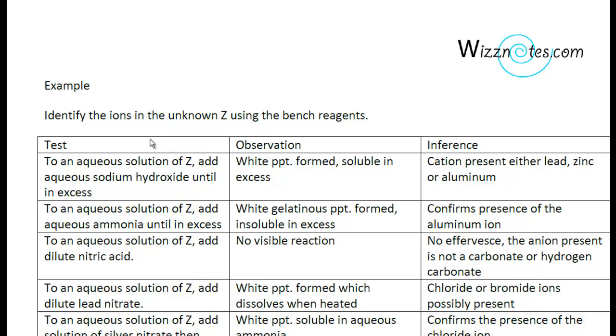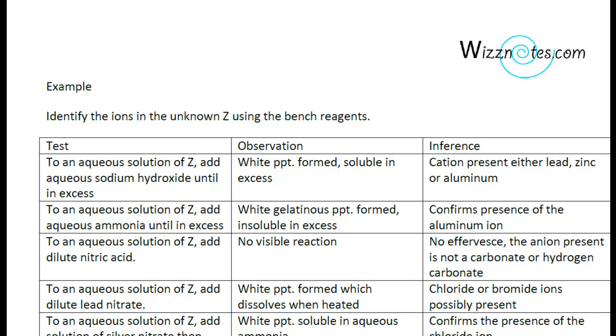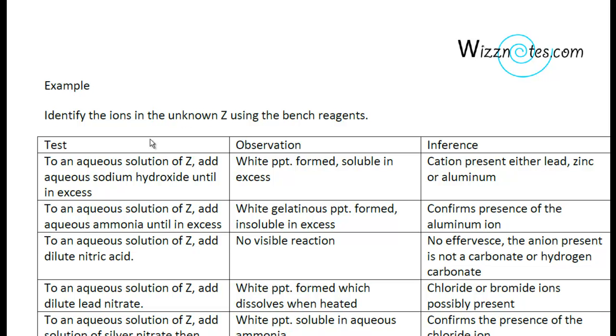Now I will start off by testing for aluminum ions and we will do this by adding an aqueous solution of ammonia to an aqueous solution of Z, the unknown. Now a white gelatinous precipitate is formed and this precipitate is insoluble in excess. This is the test that confirms the aluminum ions and this is given in the notes above.